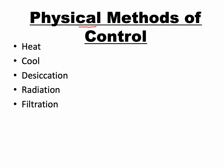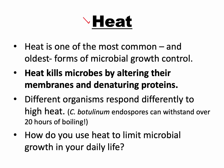The physical methods of microbial growth control we'll cover are heat, cooling, desiccation, radiation, and filtration. First is heat — one of the most common and oldest forms of microbial growth control. Think of boiling water or direct flames. Heat kills microbes — making it bactericidal against bacteria — by altering membranes and denaturing proteins. Proteins and enzymes are very sensitive to different temperatures, and high heat denatures proteins by breaking the hydrogen bonds that form their 3D structures, making them stop working and killing the organism.